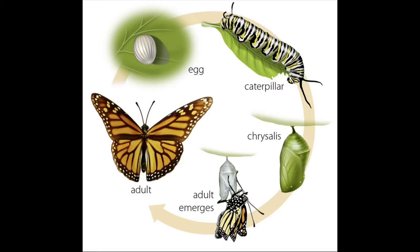egg, larva, pupa, and adult. Each stage looks completely different from the next. The young never resemble or look like their parents and almost always eat something entirely different. The female insect lays her eggs on a host plant — a plant on which another organism lives. When the eggs hatch,